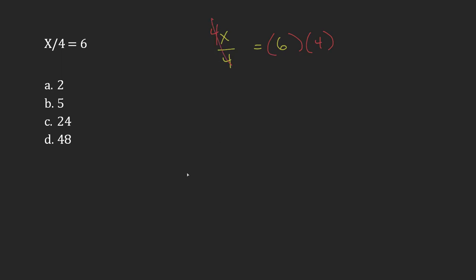That cancels the 4, leaving x equals 6 times 4, which is 24. So the answer is C: 24.